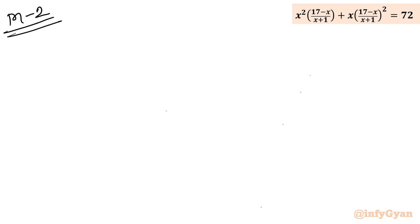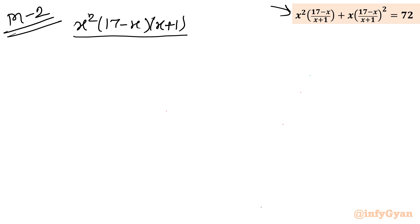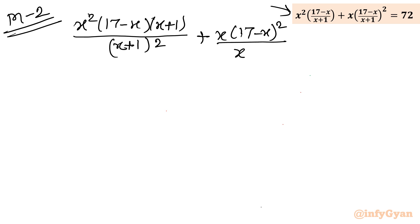Now for the conventional method — method number two — using purely algebra and synthetic division. I will first make the denominator common. Writing out the expression: x² times (17 minus x) times (x plus 1) plus x times (17 minus x)² all over (x plus 1)² equals 72.